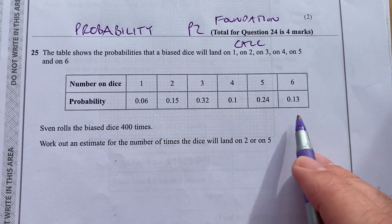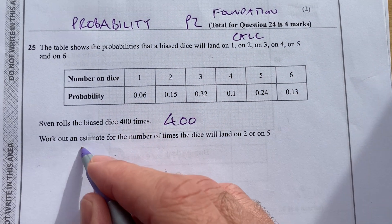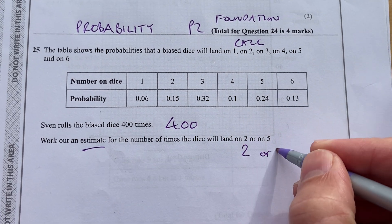So it's biased because they're not all even. Sven rolls the dice 400 times. Work out an estimate for the number of times the dice will land on 2 or 5.